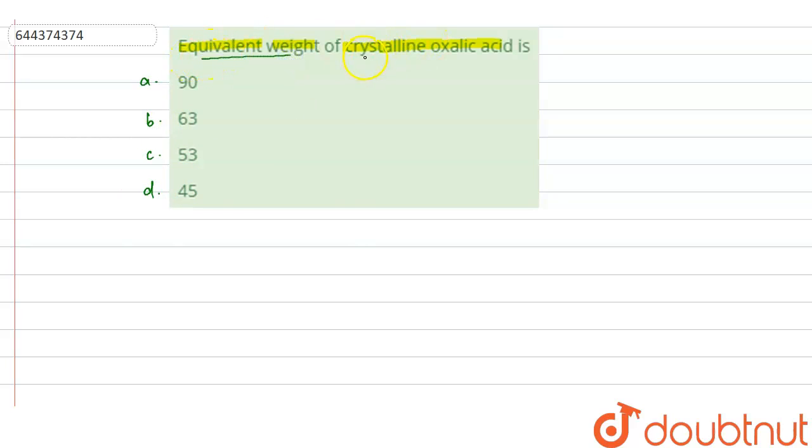In this question, we have to find out the equivalent weight of crystalline oxalic acid. Basically, the crystalline oxalic acid is - we know that oxalic acid is COOH-COOH. But in crystalline oxalic acid, there are 2 moles of water which is water of crystallization.